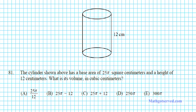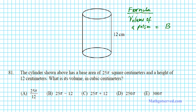Let's take a look at problem 81. It says the cylinder shown above has a base area of 25 pi square centimeters and a height of 12 centimeters. What is its volume in cubic centimeters? Now this is a circular prism and there's a standard formula for the volume of a prism. The formula for the volume of a prism is big B times H.